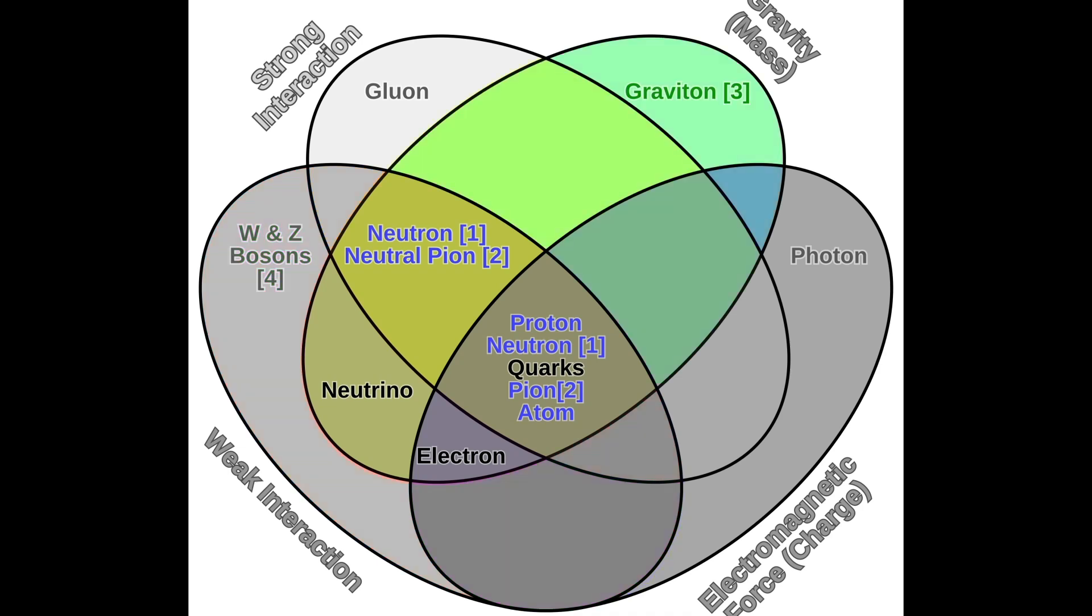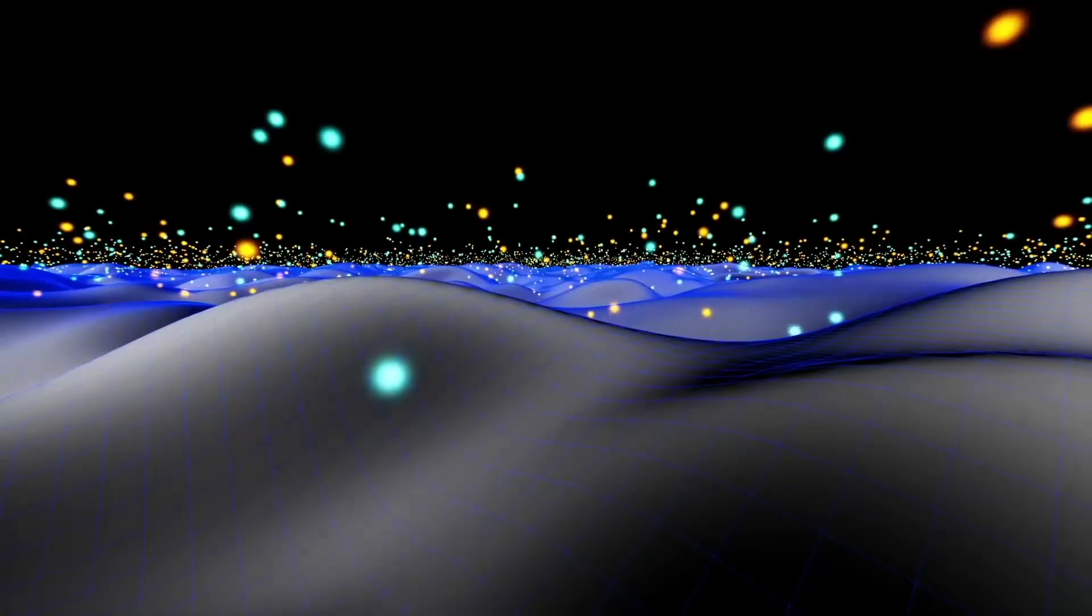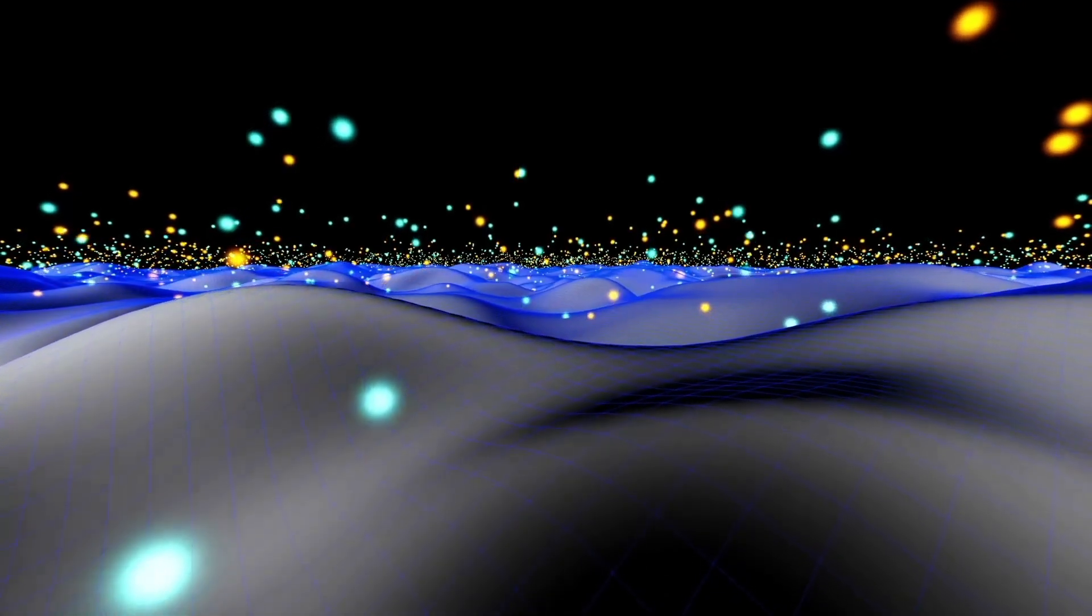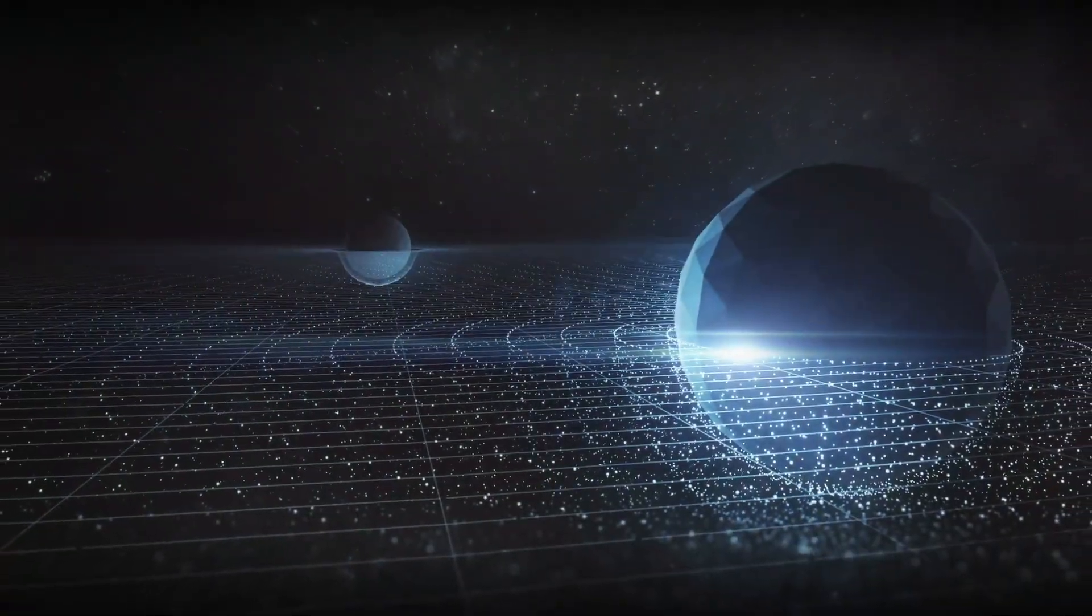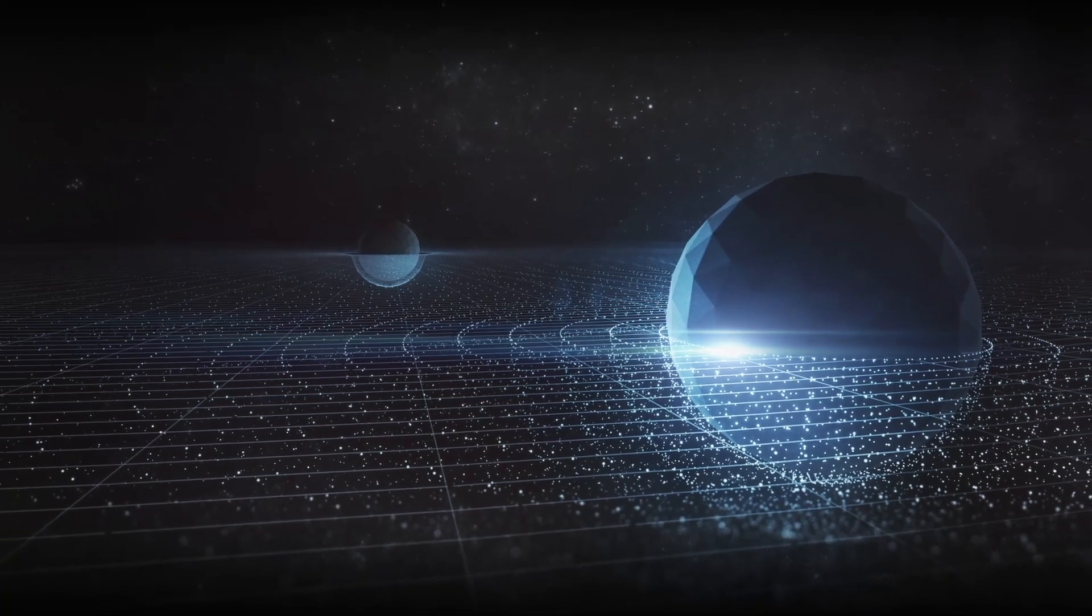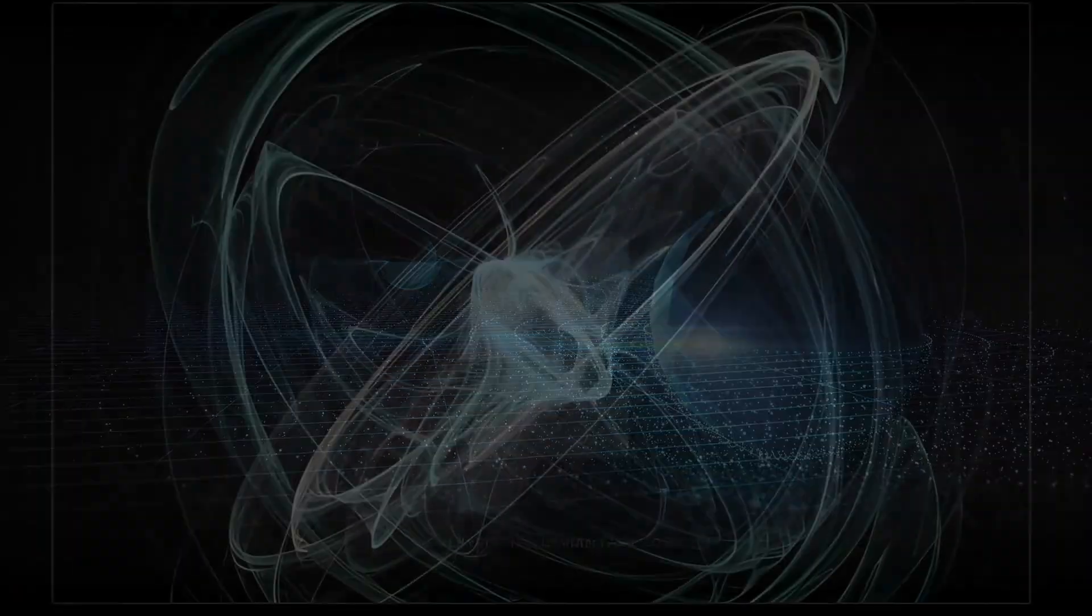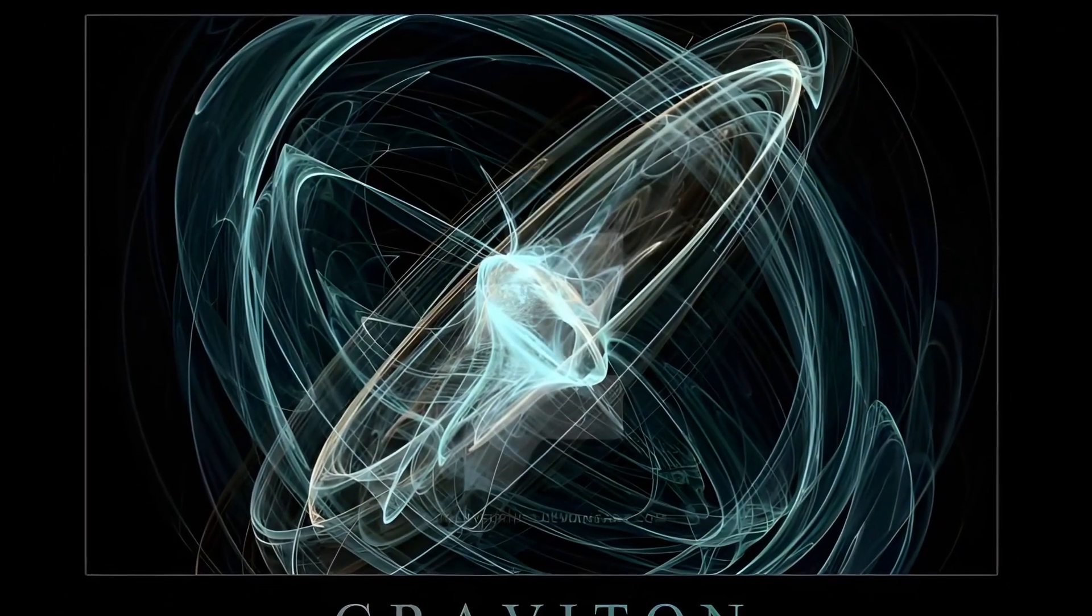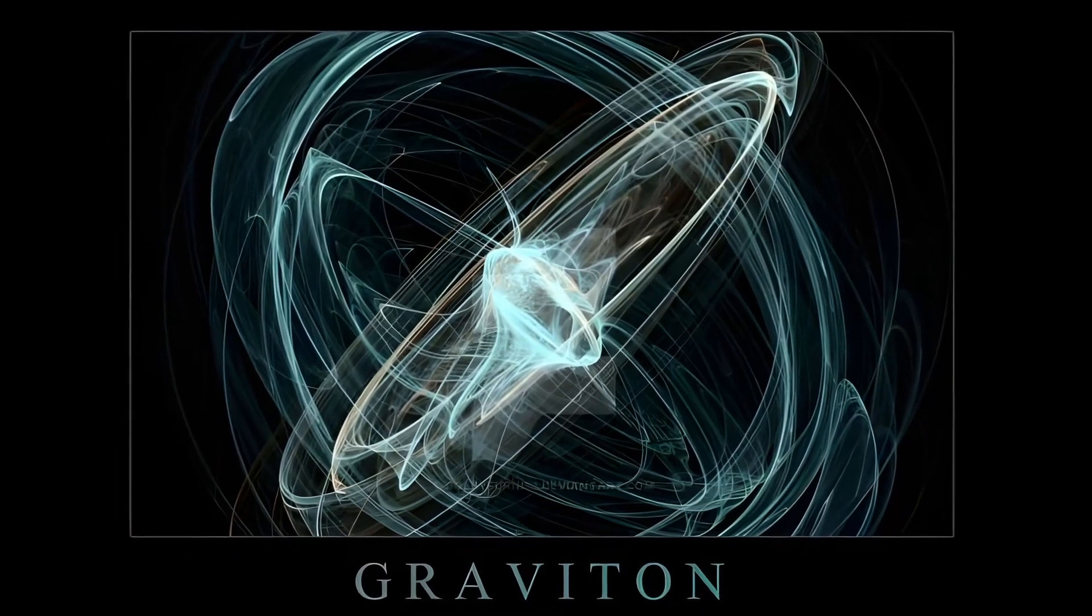According to this logic, gravitational interaction may also be mediated by a fundamental particle, the graviton, though it hasn't been observed yet. This theory would align with Einstein's general relativity and Newton's law of gravitation in weak gravitational fields. If it exists, the graviton would be massless since gravity has an infinite range and possess a spin of two, representing the characteristics of gravity.